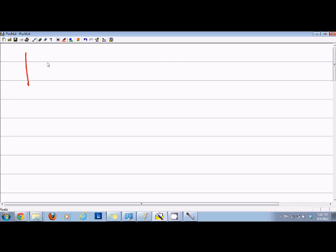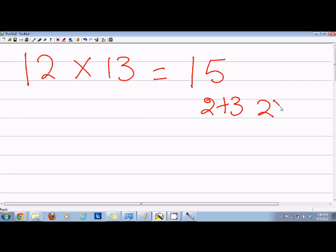For example, if I have 12 and I want to multiply by 13, I will write 1 and then add 2 plus 3 that is equal to 5 and then multiply 2 and 3 that is equal to 6. So my answer is 156.